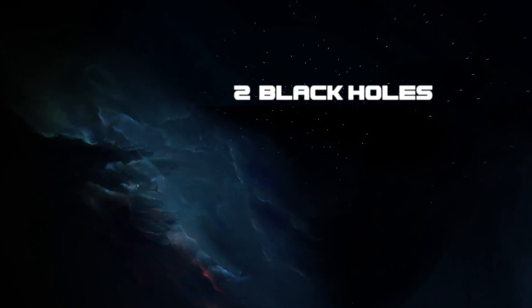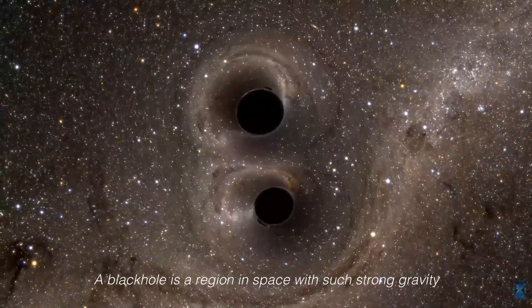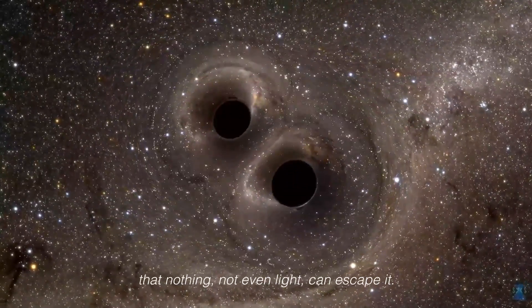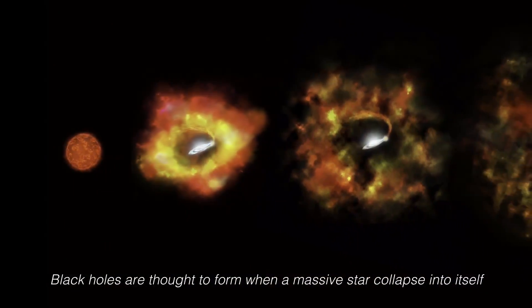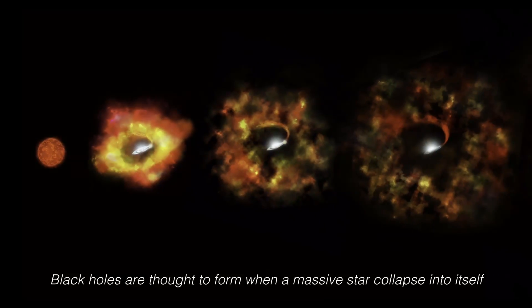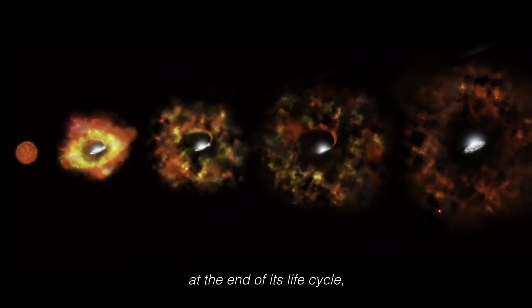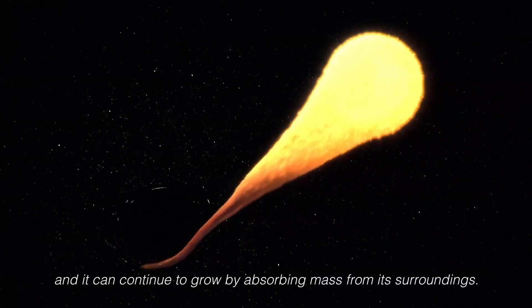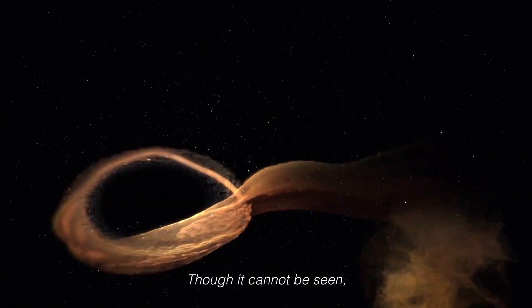Number 2: Black Holes. A black hole is a region in space with such strong gravity that nothing, not even light, can escape it. Black holes are thought to form when a massive star collapses into itself at the end of its life cycle, and it can continue to grow by absorbing mass from its surroundings. Though it cannot be seen, interaction with nearby masses can point to its mass and location.